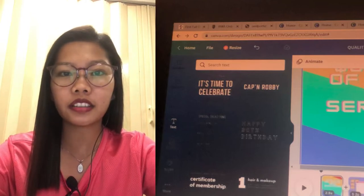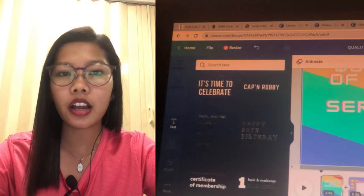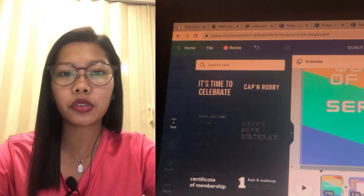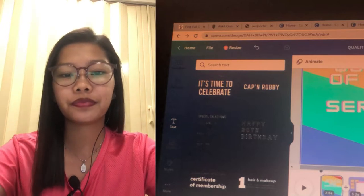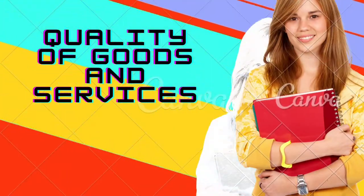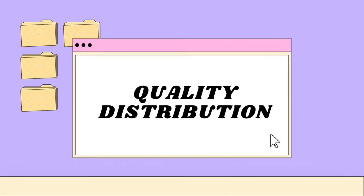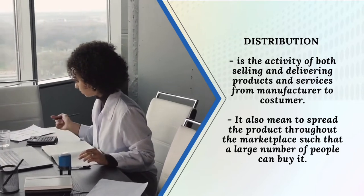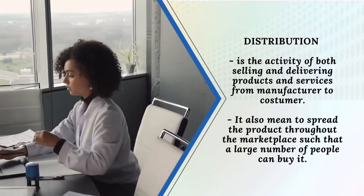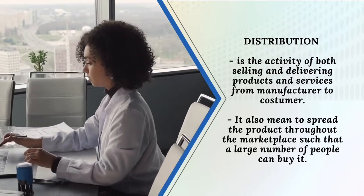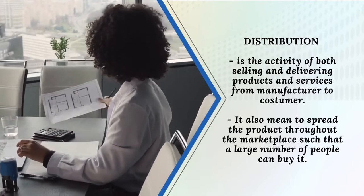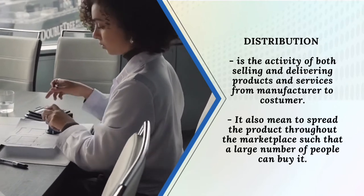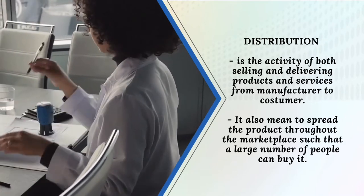Hello everyone, I'm going to present a 5 minute video about Quality Distributions of Goods and Services. Distribution means it's the activity of both selling and delivering products and services from manufacturer to customer. It also means to spread the product throughout the marketplace such that a large number of people can buy it.